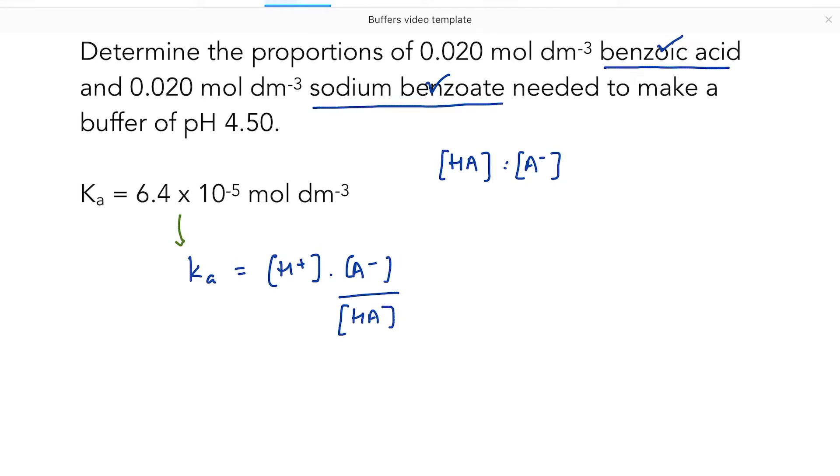I know what the pH is. So pH equals minus the log of the hydrogen ion concentration. So hydrogen ion concentration is going to equal 10 to the minus 4.5, which equals 3.162 times 10 to the minus 5 when you plug that into your calculator, per decimeter cubed.